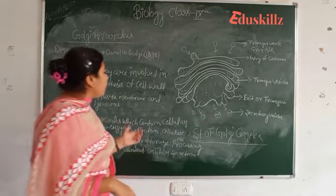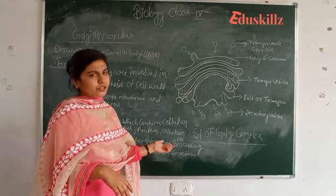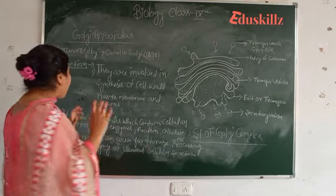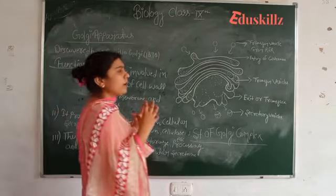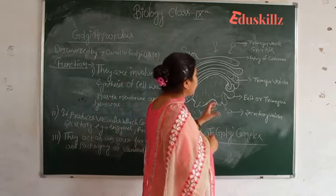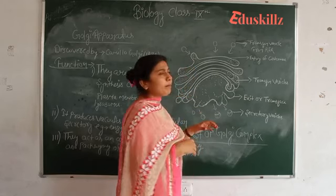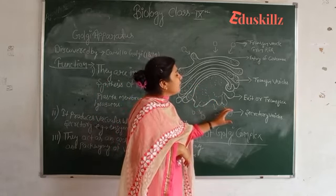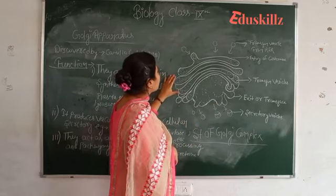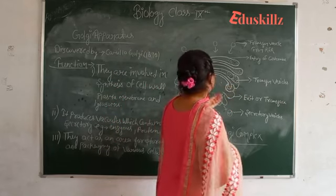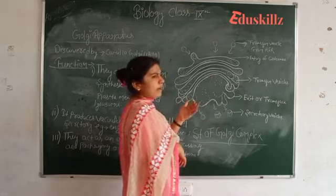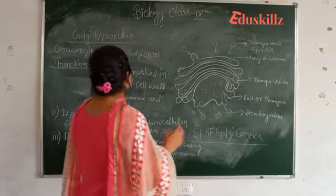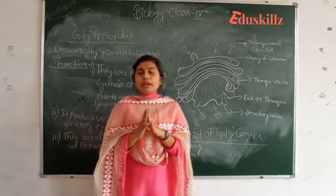The Golgi apparatus is an area for the storage, processing, and packaging of various cellular secretions. The vesicles are packaged, and enzymes and proteins can be made, which are then sent back to their target points. There is a tagging process where a tag is placed on these vesicles, so they are filtered out from the Golgi apparatus and reach their target points. This is all about the structure and functions of the Golgi apparatus — thank you.